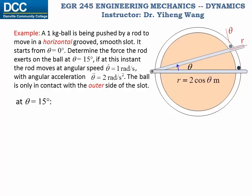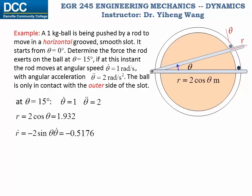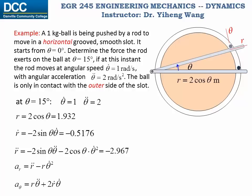Now we are ready to do the evaluation. At theta equals 15 degrees, theta-dot is given as 1 radian per second and theta-double-dot, the angular acceleration, is 2 radians per second squared. Therefore r equals two cosine theta, which is 1.932 m. r-dot equals negative 0.5176 m/s. r-double-dot equals negative 2.967 m/s². Therefore the radial and transverse accelerations can be evaluated by the two equations to give these values, both in units of m/s².